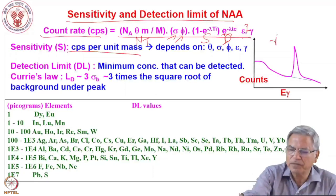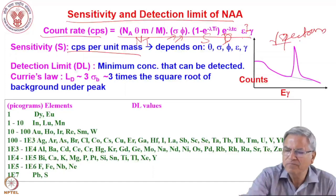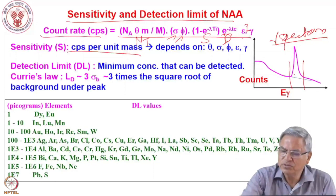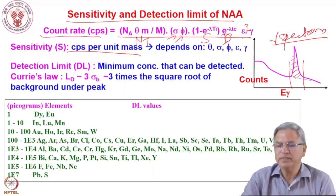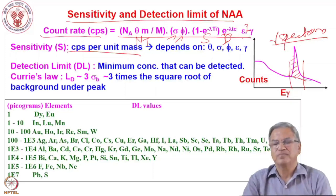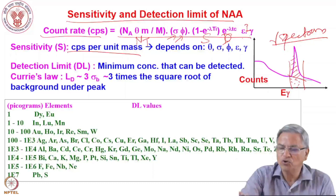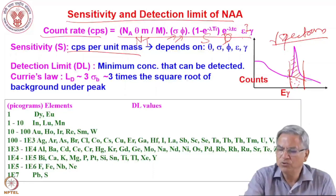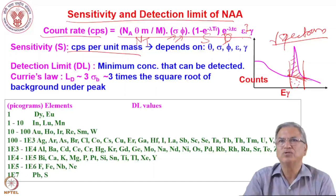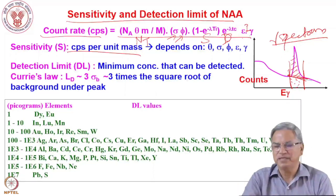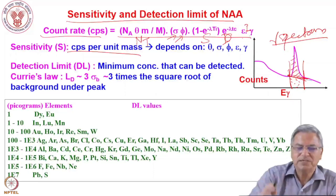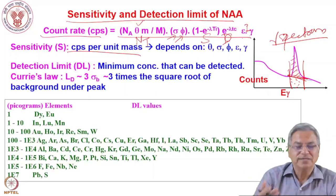The second quantity is the detection limit — the minimum quantity that can be determined by this technique. When there is no sample, you get a flat background in the gamma spectrum, sometimes with a small bump that could be confused with a real signal. What is done to define the detection limit is based on Currie's law: if you record the background gamma ray spectrum in the region of the peak of interest, the standard deviation of background counts σ_b equals the square root of the background counts B, because radiation counting follows a Poisson distribution where variance equals the mean.